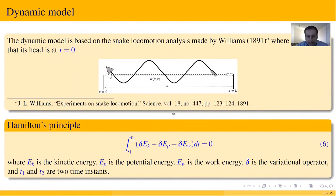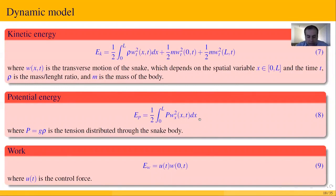We assume that the head is at x equal to 0. So here is the head of the snake. The kinetic energy, the potential energy and the work are given by the following equations. Highlighting that m is the mass, rho is the mass per unit length ratio, p is the tension distributed through the snake body, and u(t) is the control force.